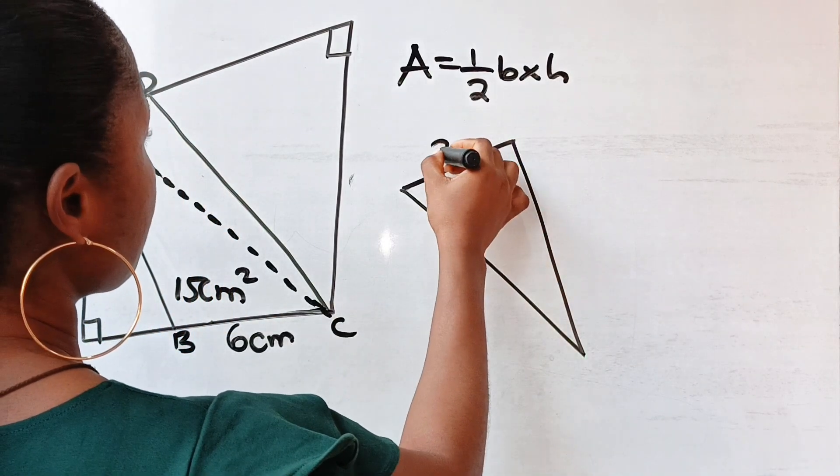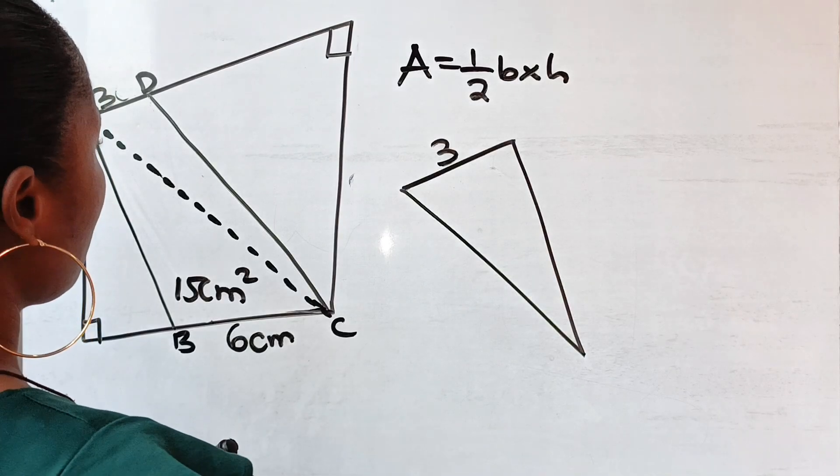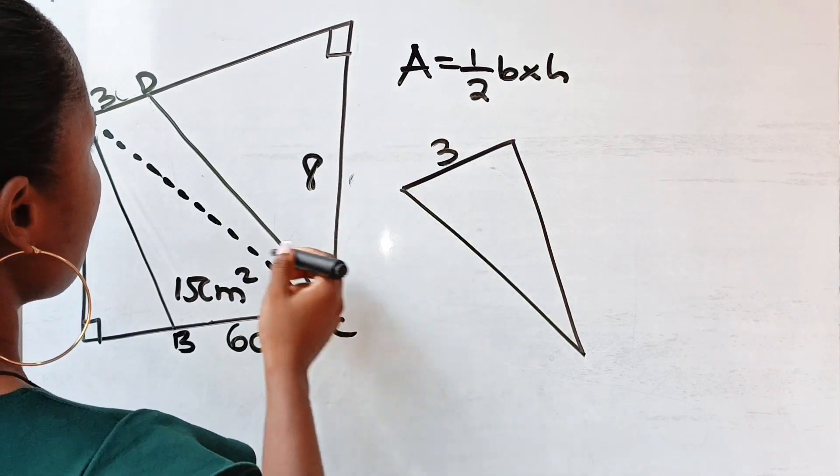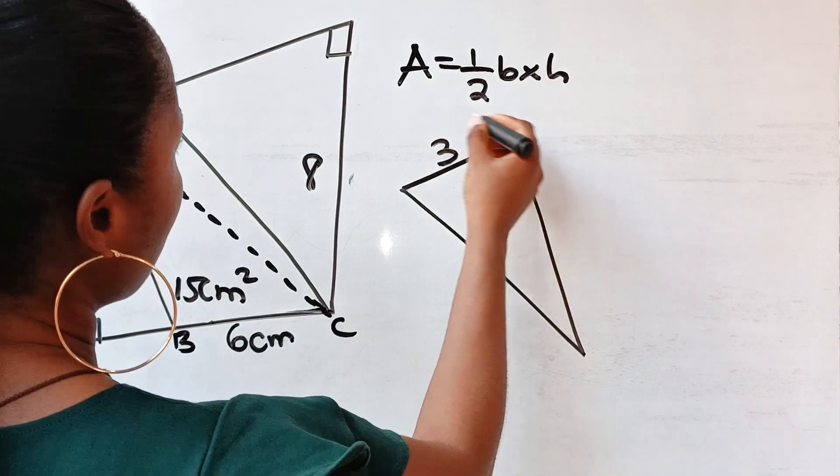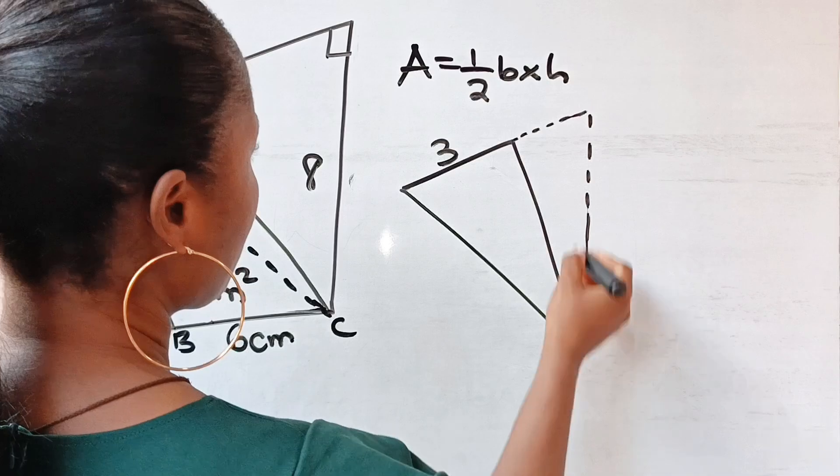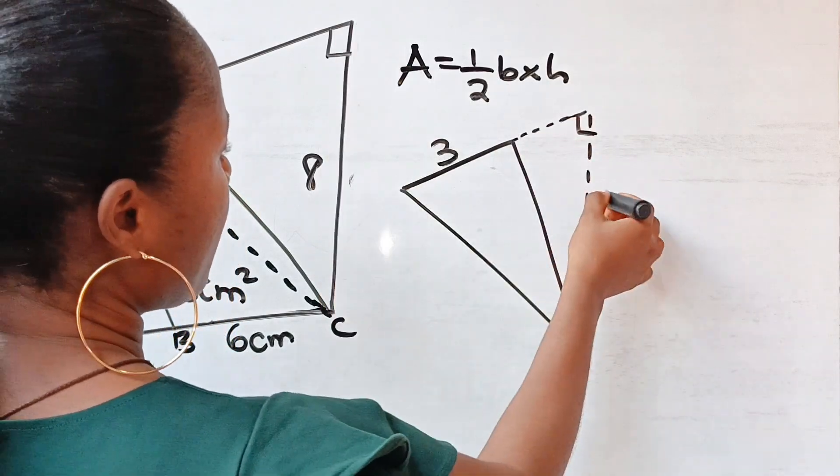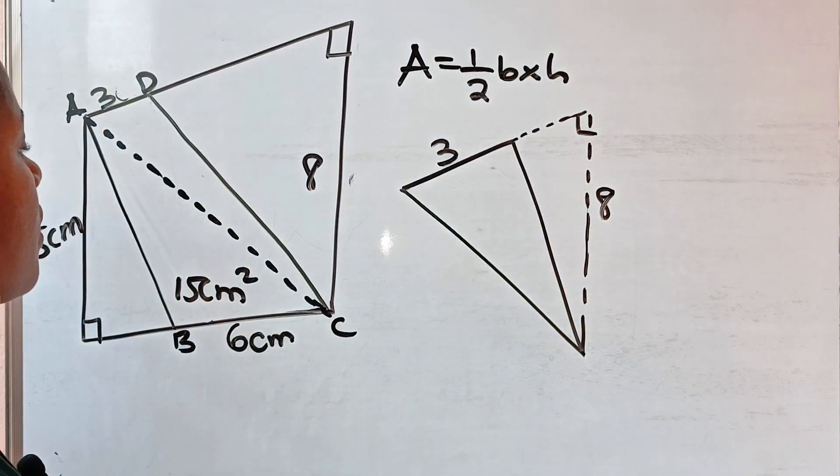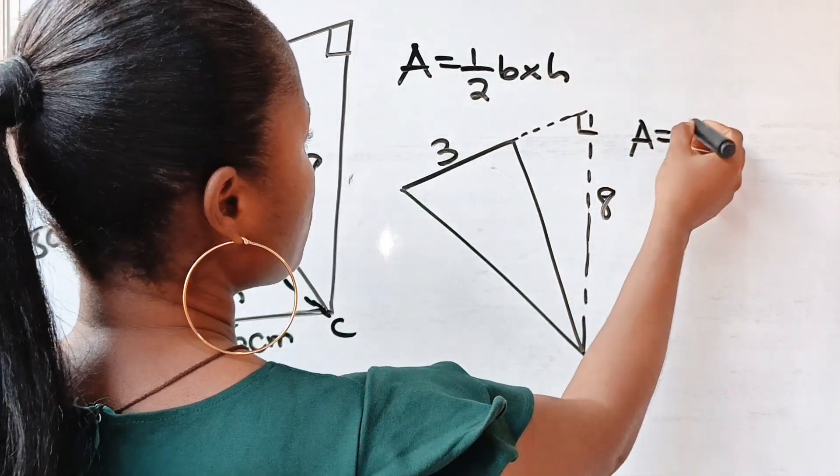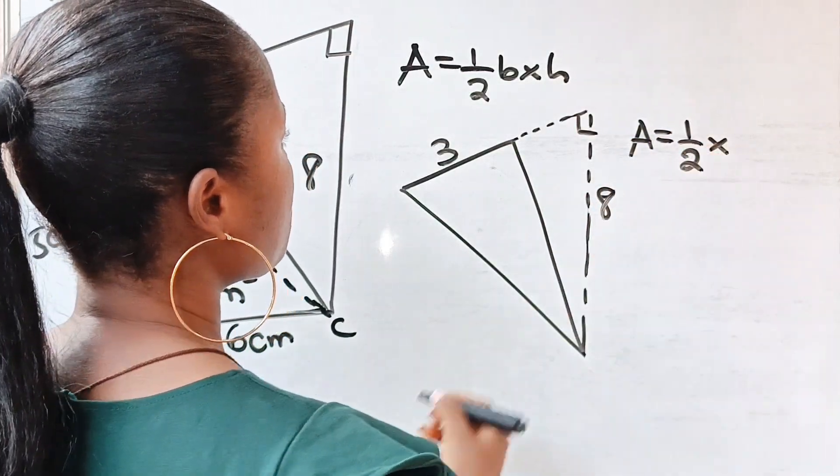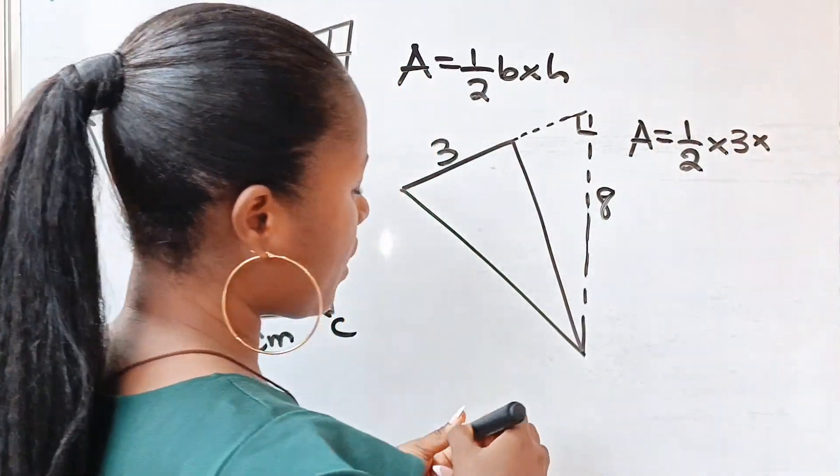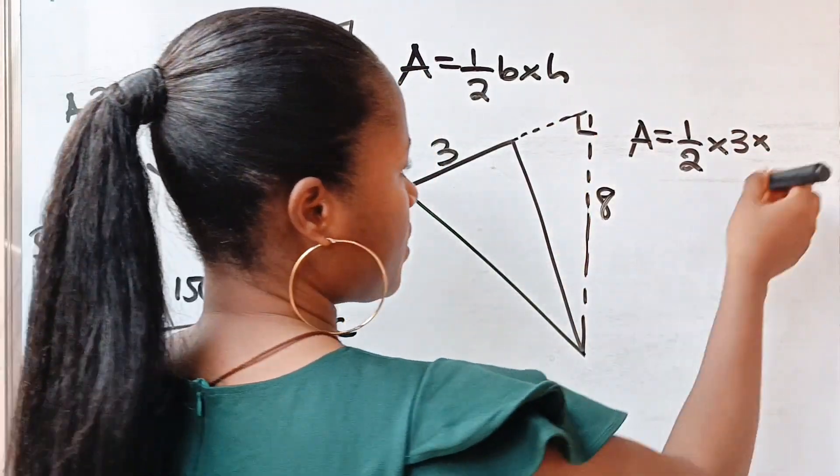From here to here, we are told that the height is 8, right? So from here to here is not given, but the height of this triangle is given as 8. Now area is equal to half multiplied by the base, the base is 3, multiplied by the height, which is 8.